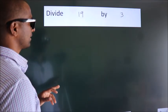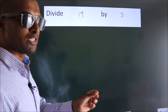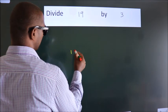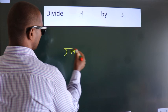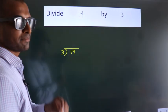Divide 19 by 3. To do this division, we should frame it in this way. 19 here, 3 here. This is your step 1.